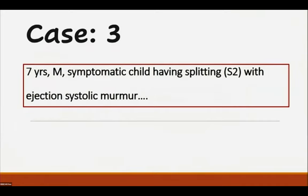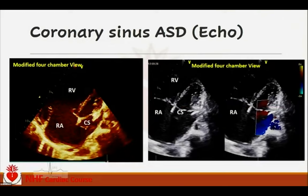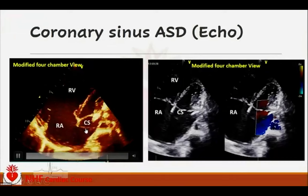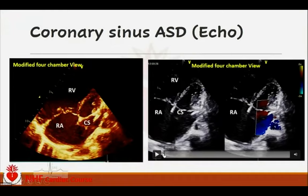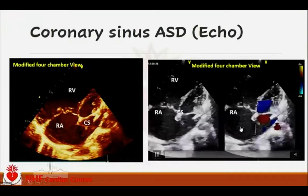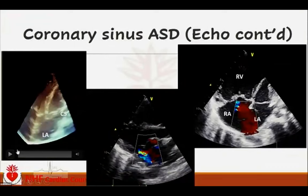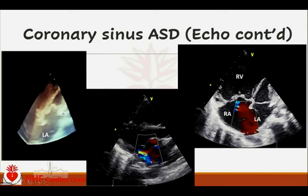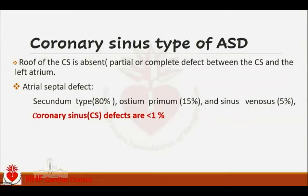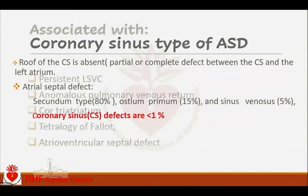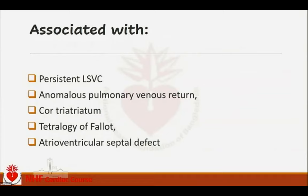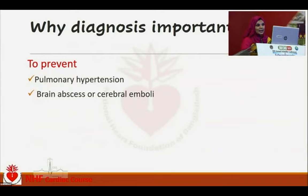Case 3: a 7-year-old symptomatic patient with ejection systolic murmur. Again, the coronary sinus was dilated with unroofing of the proximal portion and hugely dilated right-sided chambers. Anomalous left-sided upper pulmonary venous drainage was found. 3D echocardiography confirmed proximal unroofing of the coronary sinus communicating with the left atrium. The patient also had mitral valve prolapse with mild MR and a large secundum ASD. Coronary sinus type ASD is partial or complete unroofing of the coronary sinus communicating with the left atrium; it is very rare — less than 1% of all ASDs — and associated with persistent LSVC, anomalous pulmonary venous return, cor triatriatum, tetralogy of Fallot, and AVSD.